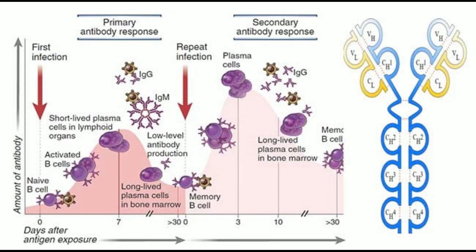Characteristic #9 - Types of Antibodies: A large amount of IgM and a small amount of IgG are produced during the primary immune response. A large amount of IgG, a small amount of IgM, IgA, and IgE are produced during the secondary immune response.